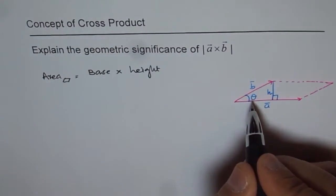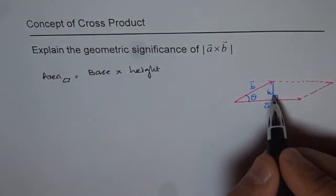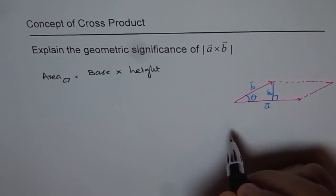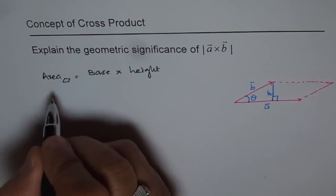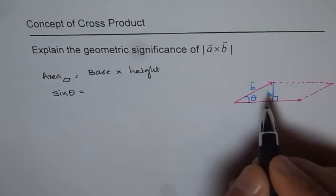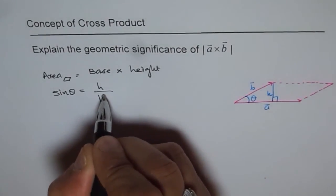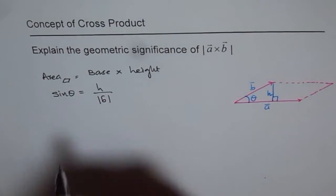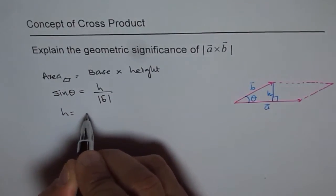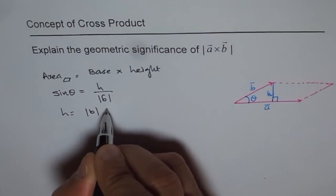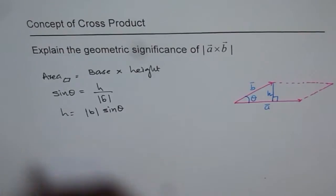Now, if this is angle theta, then what is height? We can write height in terms of B. So we know sine theta equals to H over magnitude of B. So from here, we can write H equals to magnitude of B times sine theta.